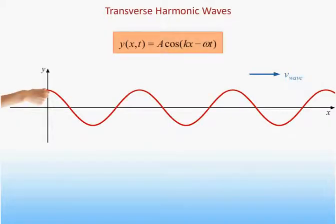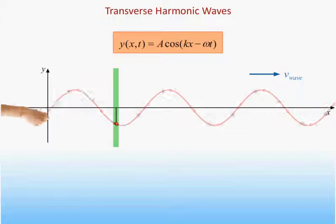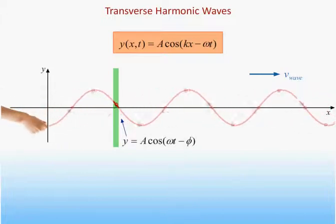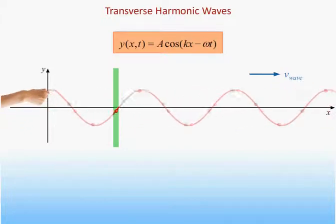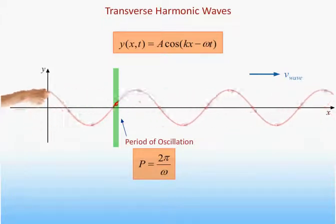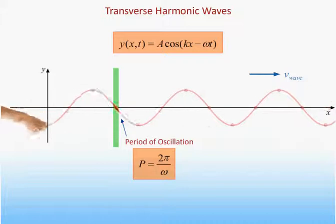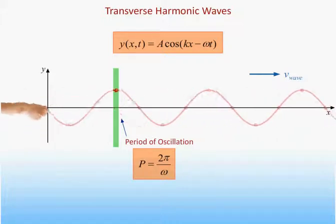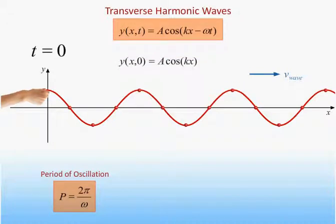We will now examine the form for the harmonic wave we obtained on the last slide in more detail. Here we see the displacement of a string as a function of time as a wave travels on it in the x-direction. If we focus in on any specific piece of the string, we see that it is just moving from side to side with simple harmonic motion with frequency omega. The time it takes any piece of the string to make one complete oscillation is related to the frequency in exactly the same way we found when studying simple harmonic motion. We will use the symbol p to represent the period of the oscillation of the waves on a string so that we can use t to represent the tension in the string. If we now freeze this animation at t equals zero, we see a harmonic wave along the x-axis whose amplitude and wavelength are easy to identify.